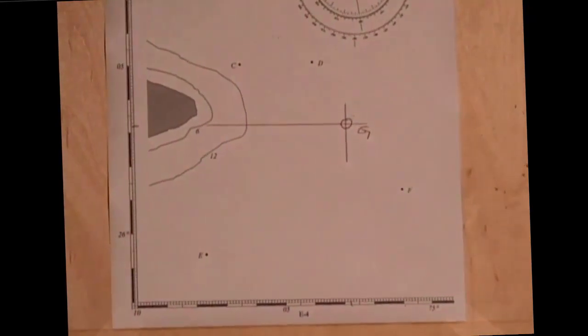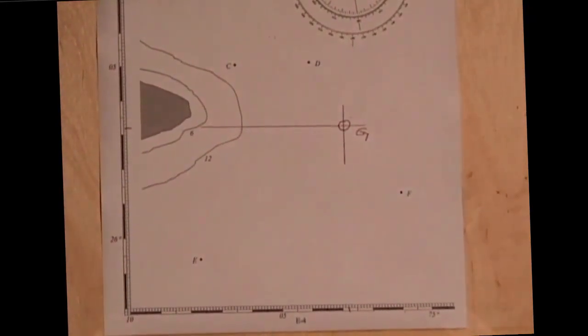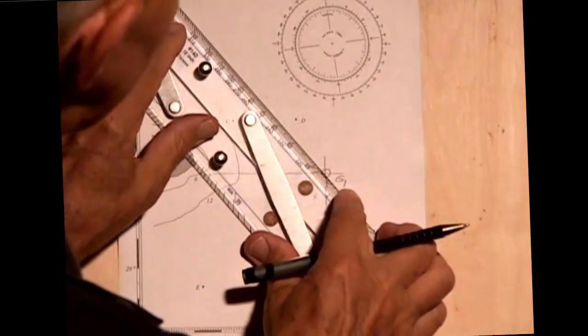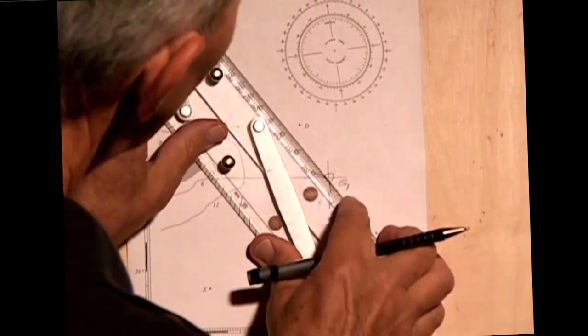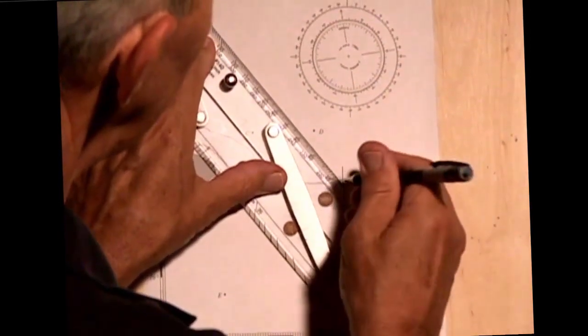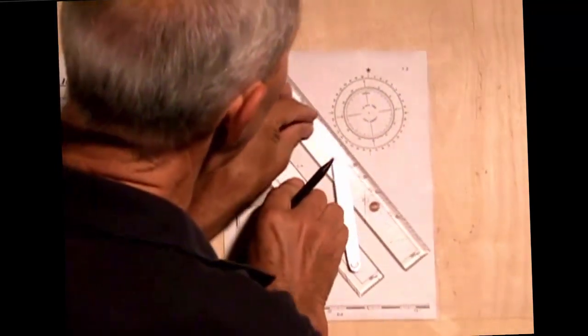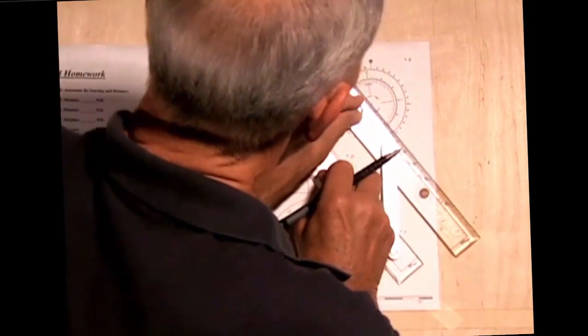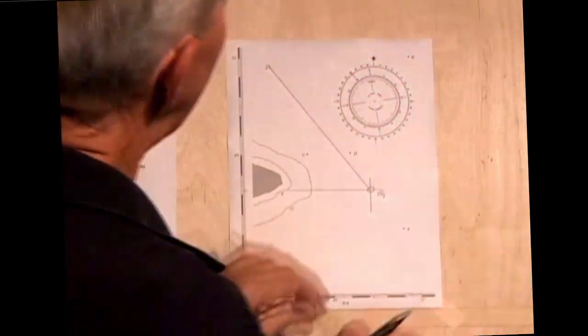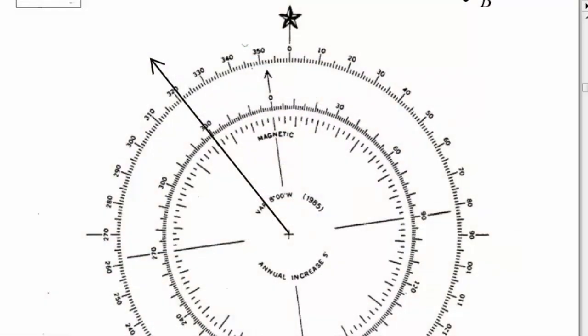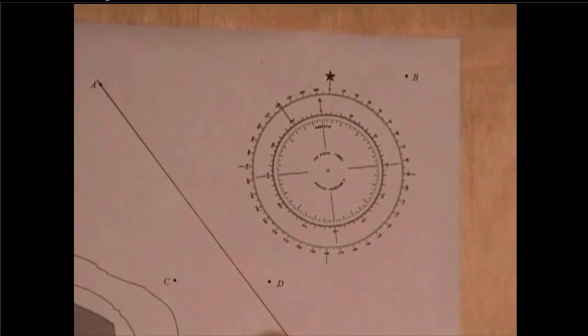And then the question goes on to say, determine the bearing and distance from G to A. So I'm going to take that point G and draw a line from it to A. And I'm going to walk my parallel rules over to the compass rose and find that that point is, looks like 321. Yes, 321 true is the bearing from G to A.